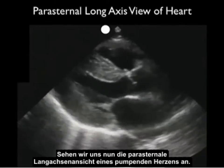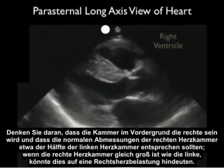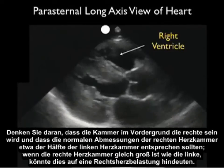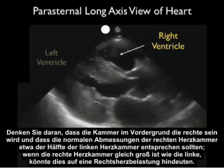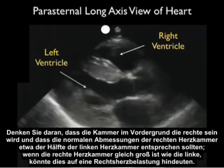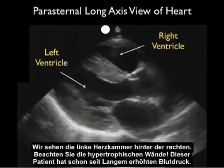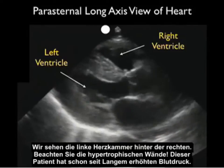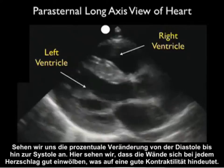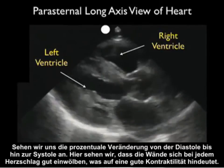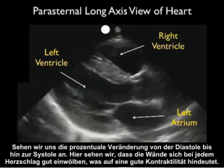Let's now look at the parasternal long axis view of the heart in action. The most superficial chamber will be the right ventricle, and its normal dimensions are that it should be about half the size of the left ventricle. If the right ventricle is the same size as the left ventricle, that could be a sign of RV strain. We see the left ventricle posterior to the right ventricle — note its hypertrophic walls; this patient actually had long-standing hypertension. Looking at the percentage change from diastole through systole, we see that the walls come in well with each heartbeat, indicating good contractility.